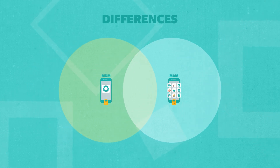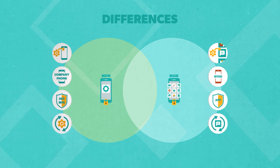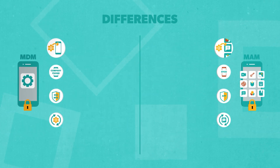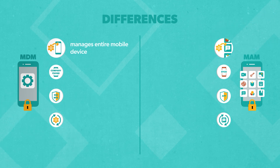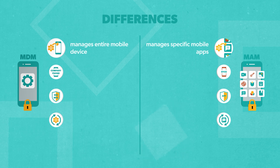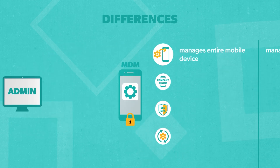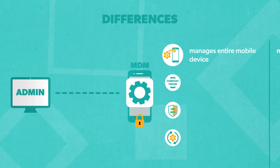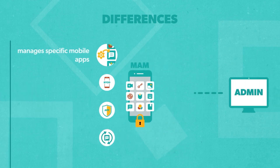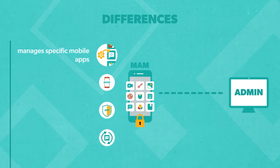There are four main differences between MDM and MAM. Number one: MDM focuses on managing the entire mobile device, while MAM focuses on managing specific mobile apps. This means that MDM gives admins more control over the device itself, while MAM only offers control over the data and functionality within the apps.